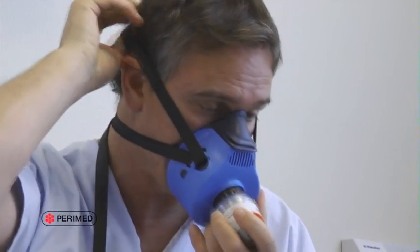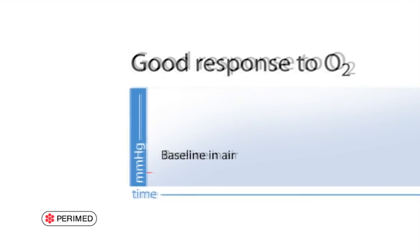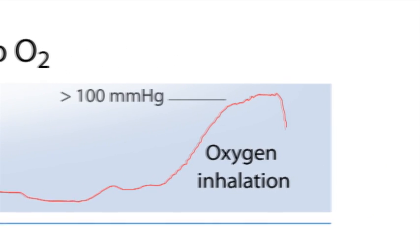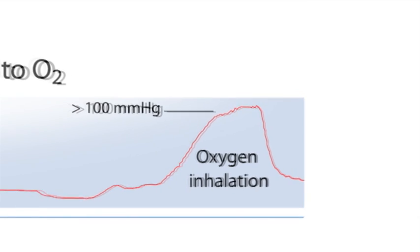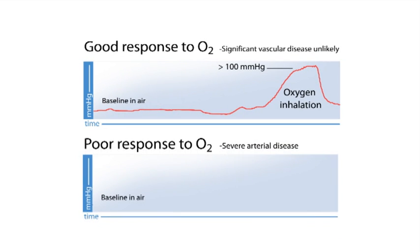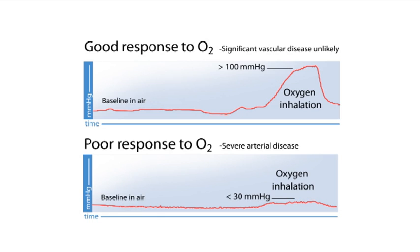This way, you can determine whether the low values are due to a reversible oxygen barrier, such as edema, inflammation, or macrovascular disease. In healthy people breathing 100% oxygen at normobaric pressure, TCPO2 values always increase to greater than 100 millimeters of mercury. Such a response to breathing oxygen indicates that significant macrovascular disease is not likely. An increase in TCPO2 when breathing normobaric oxygen that is less than 30 millimeters of mercury is consistent with severe arterial disease. These patients should undergo further vascular assessment if it has not already been performed.